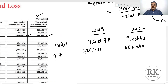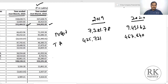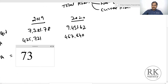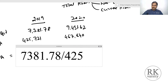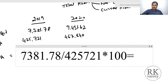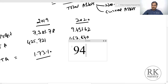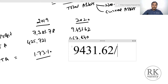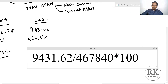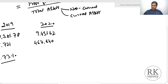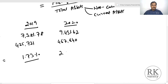Taking rounded numbers (though decimal values should be used), we calculate return on total assets. For 2019: 7,381.78 divided by 4,25,721 multiplied by 100 equals 1.73%. For 2020: 9,431.62 divided by 4,67,840 multiplied by 100 equals 2%.